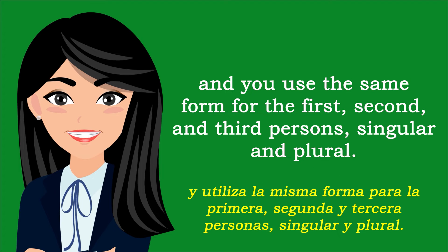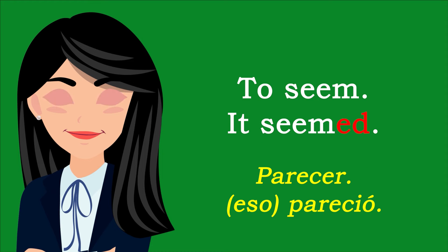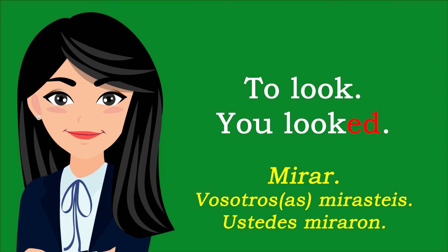Past tense formation: Forming the past simple tense of regular verbs is mostly straightforward, and you use the same form for the first, second, and third persons, singular and plural. If the basic form of the verb ends in a consonant or a vowel other than E, add ED to the end. For example: To seem — It seemed. To laugh — We laughed. To look — We looked.